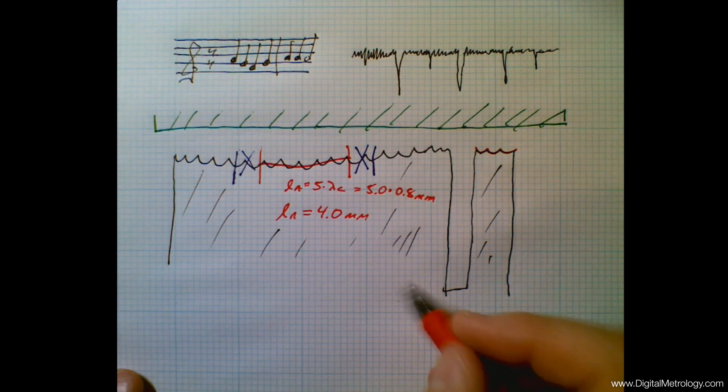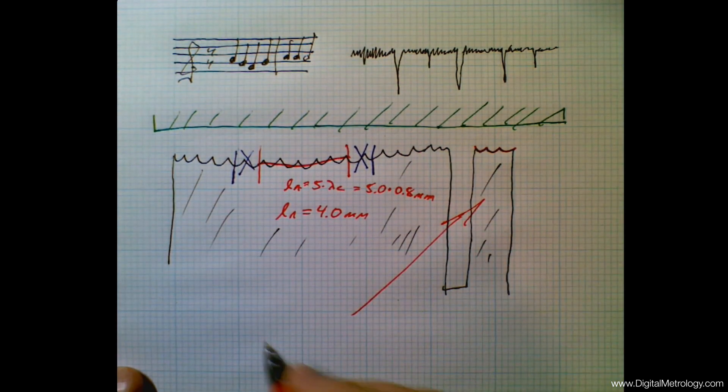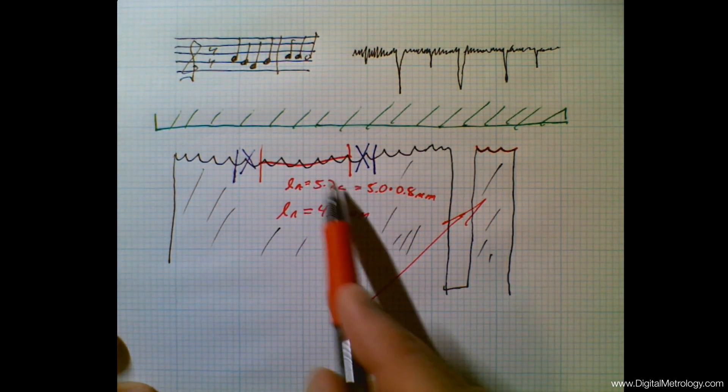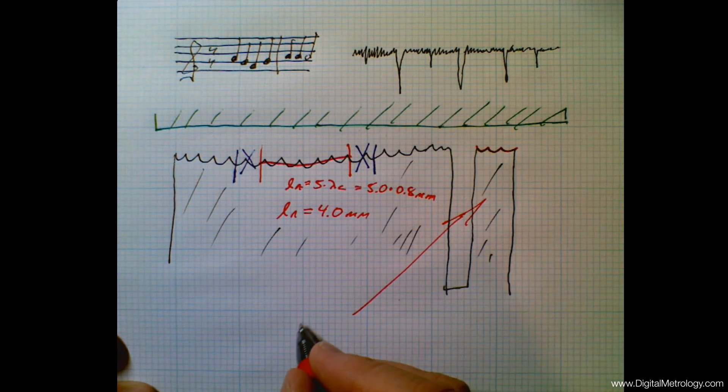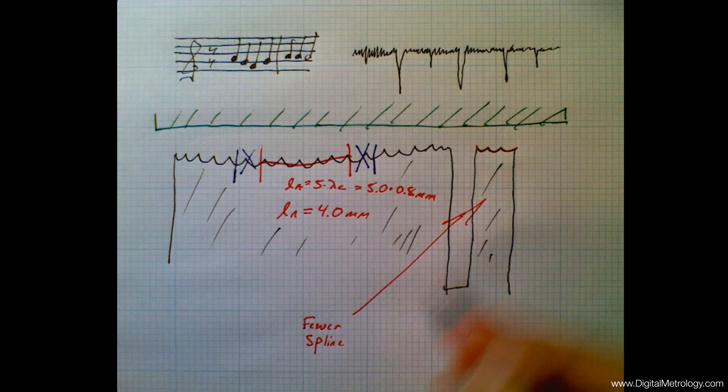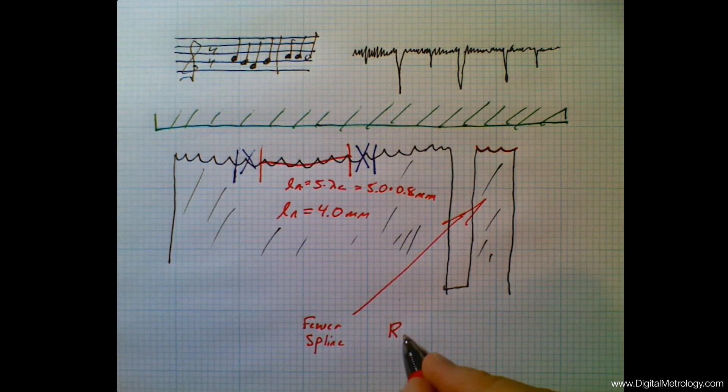So in cases of a short surface like this, what we really should do is another approach. We don't need to have five—it's a recommendation, not a requirement. So perhaps we can use fewer cutoffs or fewer sampling lengths. Another option would be to switch to perhaps spline filtering instead of Gaussian.